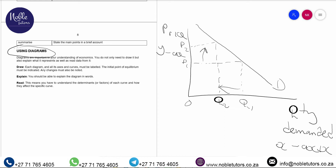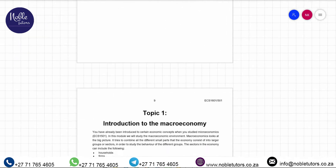You should also be able to read graphs, meaning you must understand the determinants or factors of each curve and how they affect that specific curve. For the demand curve, the determinants include the good's price — which is what we have on the graph — but also income, expectations, advertising, population and composition. That's a recap of microeconomics, because macroeconomics is an aggregation of the economy as a whole, and some aspects from microeconomics will form part of macroeconomics.